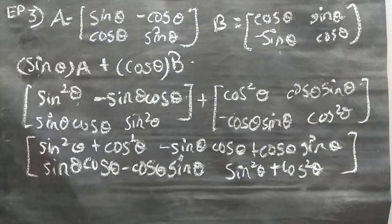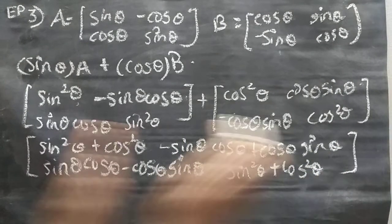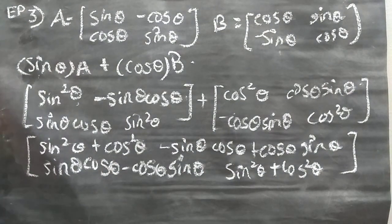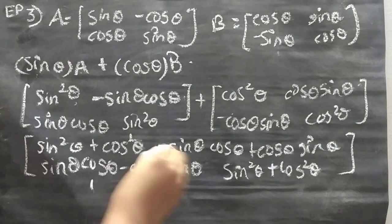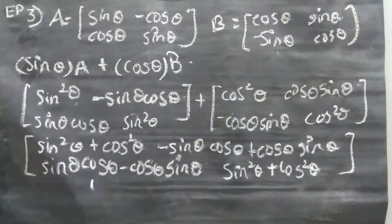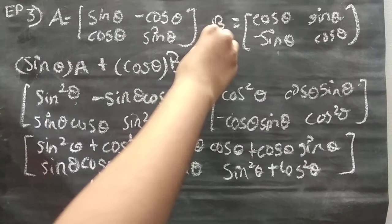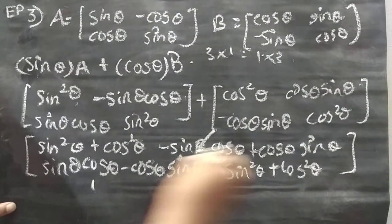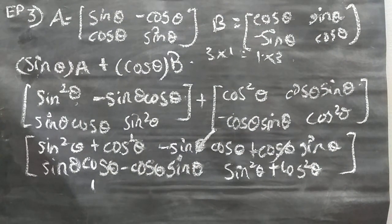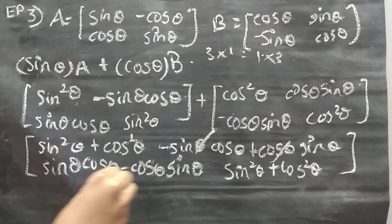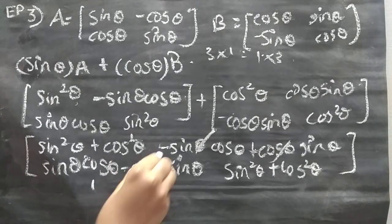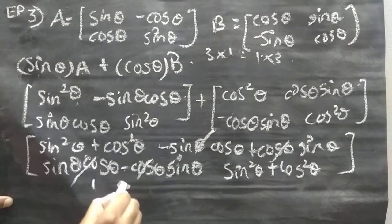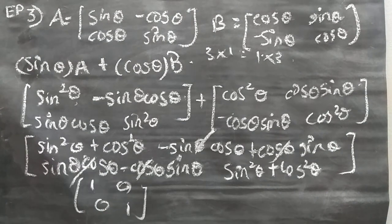Now simplifying: sin²θ + cos²θ equals 1. For the off-diagonal elements, −sinθcosθ + cosθsinθ cancels to 0, since cosθsinθ and sinθcosθ are the same. Similarly sinθcosθ − cosθsinθ cancels to 0. So the result is the identity matrix [1, 0; 0, 1]. Answer is option B.